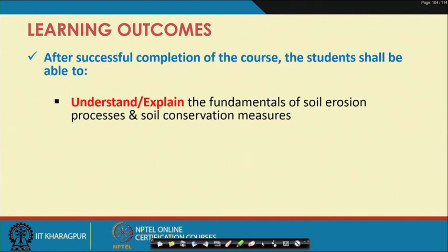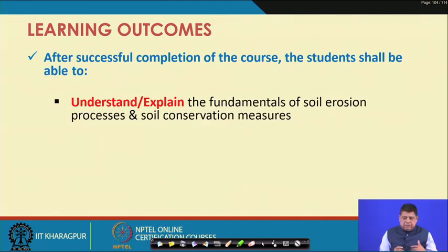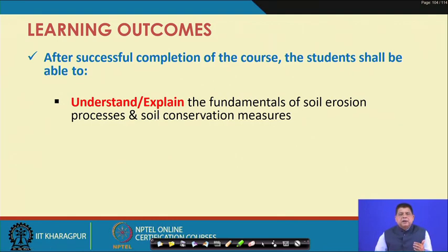Each Bloom's level is color-coded: Level 1 is black, Level 2 is red, Level 3 is light green, Level 4 is blue, Level 5 is deep green, and Level 6 — synthesis or creating — is yellow. In the learning outcomes we start at Level 2 intentionally, because Level 1 is well understood — if you study something you obviously have to remember definitions, formulae, and variables. So we begin with Level 2: understand and explain the fundamentals of soil erosion processes and soil conservation measures.